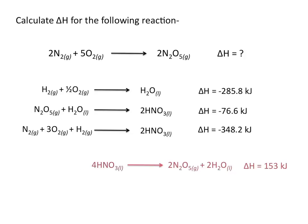This gives us the new reaction: 4HNO3 goes to 2N2O5 plus 2H2O, and this reaction has a delta H value of 153 kilojoules per mole.